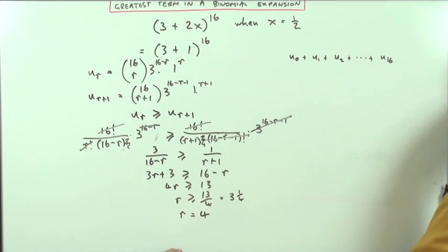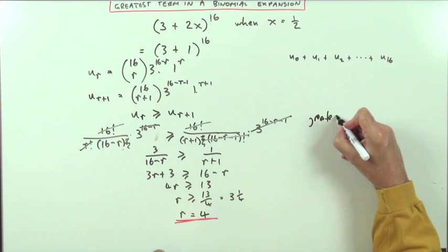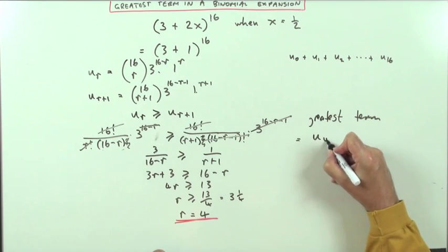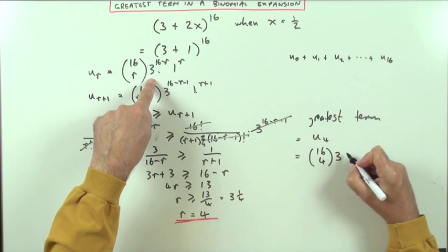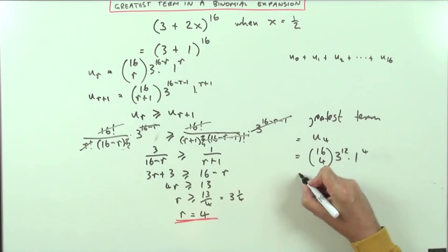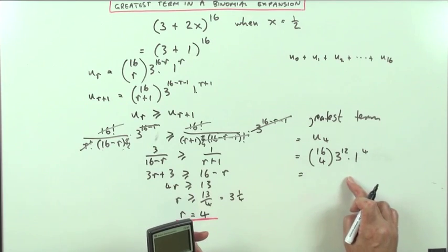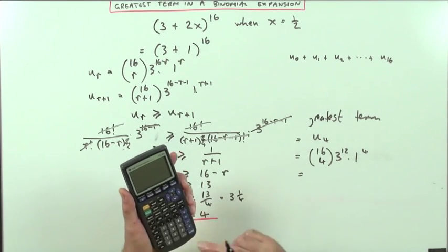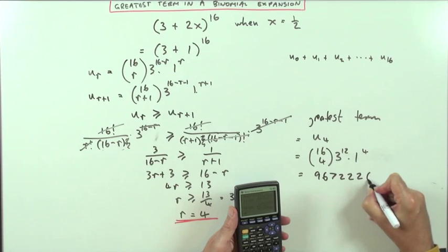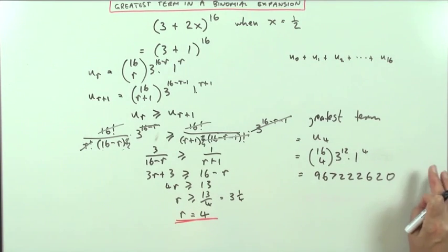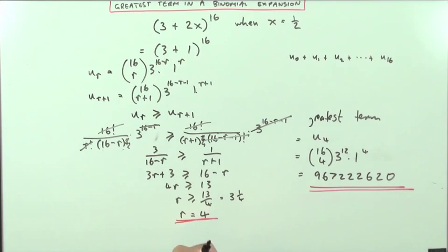So the greatest term is u4, which is C(16,4) · 3^12 · 1^4. The 1^4 makes no difference. You could compute C(16,4) as (16·15·14·13)/(4·3·2·1) times 3^12. Evaluating this on the calculator gives 967,222,260. Since x had a numerical value, all terms are just numbers, and that is the greatest term in this expansion.